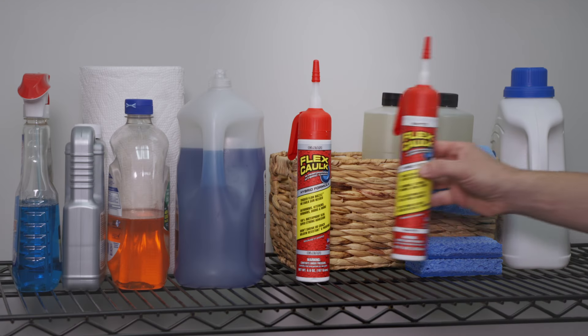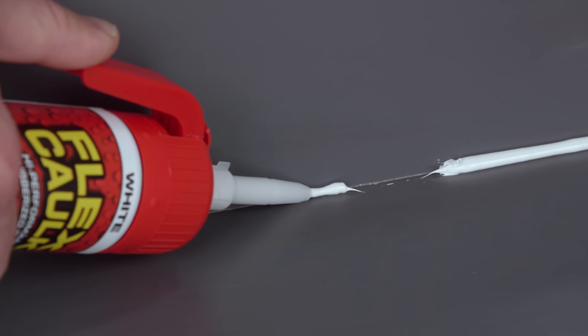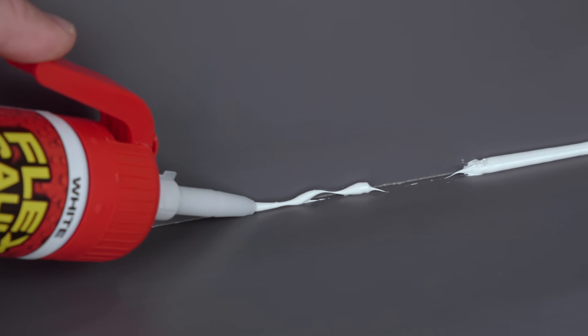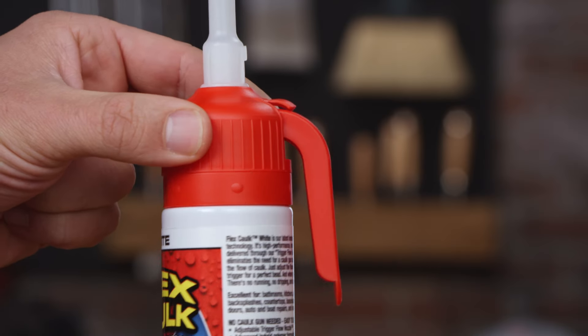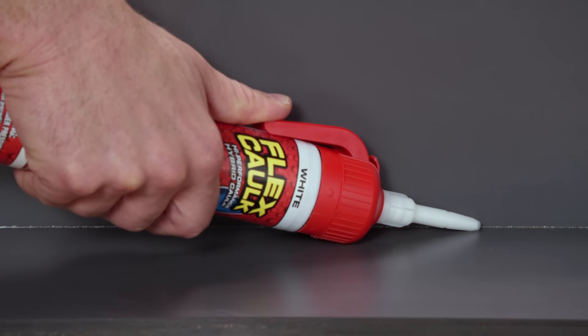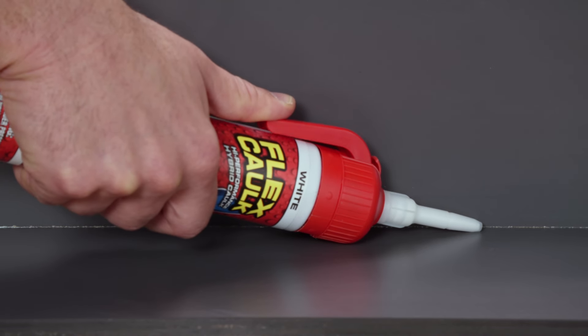Always store flex caulk in a cool, dry environment. As you near the end of the life of the can, the caulk will start to come out much slower. Make sure the trigger flow nozzle is on max and wide open. If nothing still comes out, the can is empty.